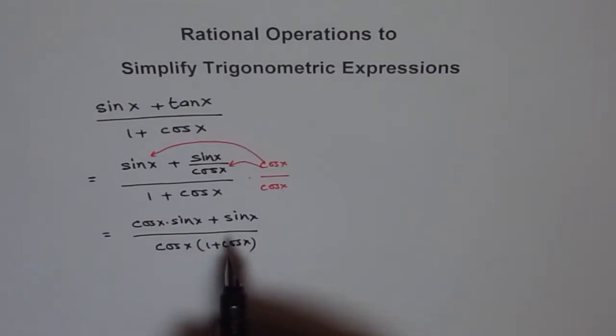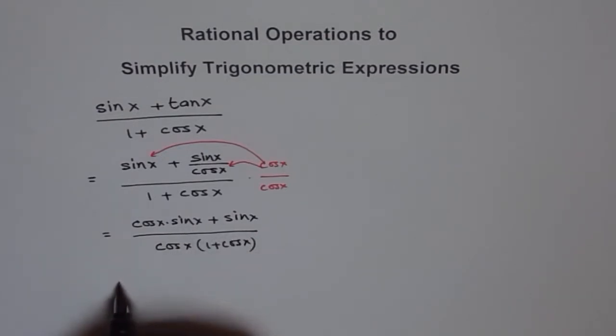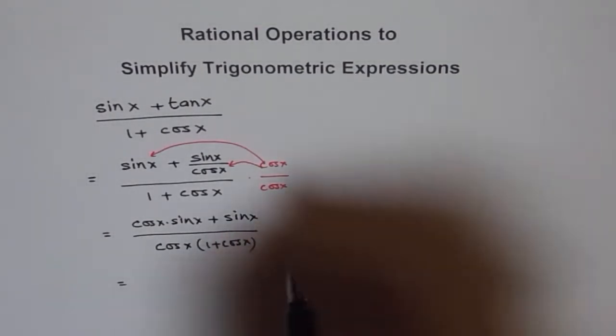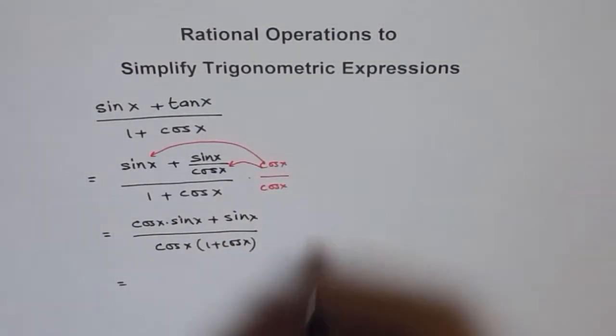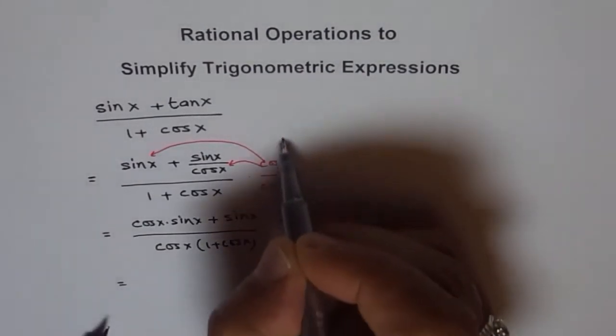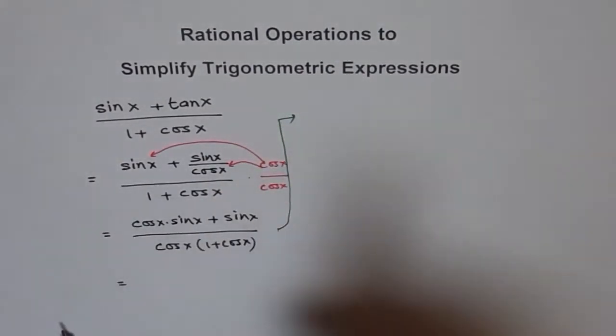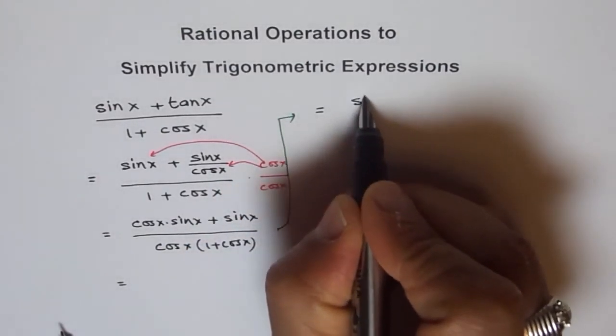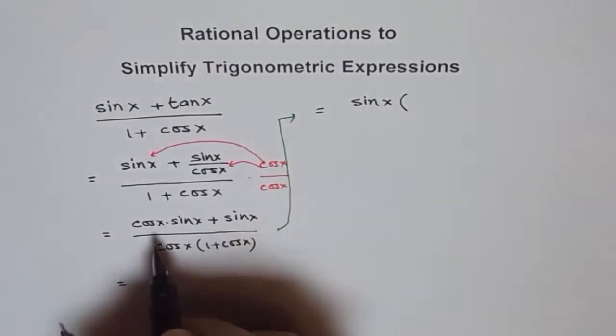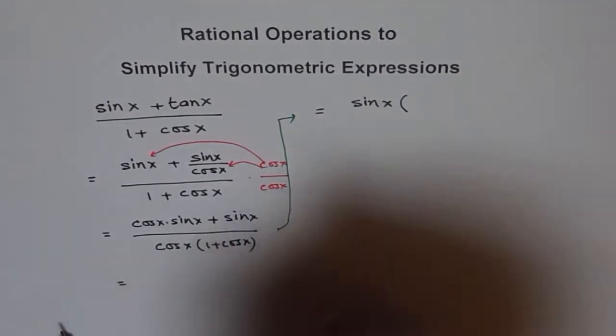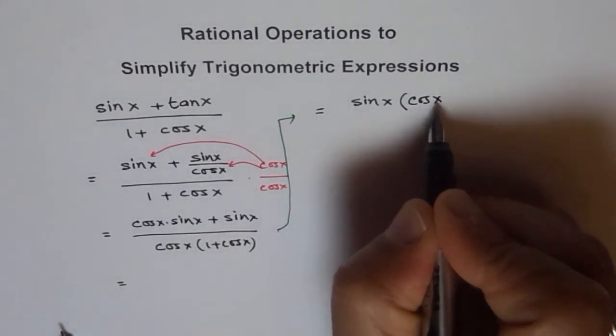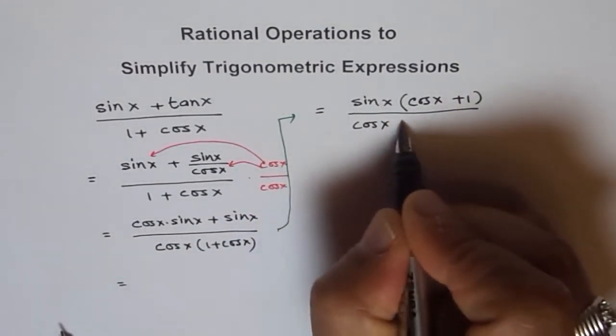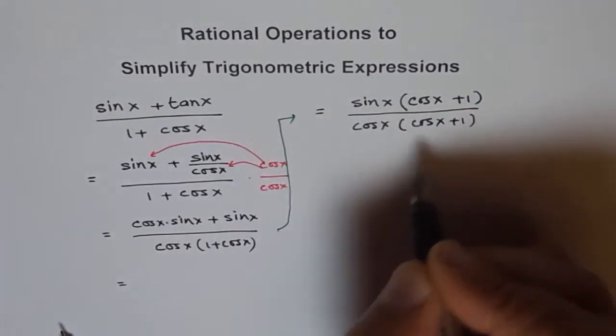Now, we can factor out sin x. If you factor out sin x, what do you get? Let me write this on this side. In the numerator we get sin x times cos x plus 1, and in the denominator we have cos x times cos x plus 1.